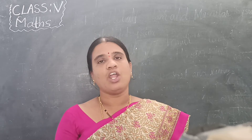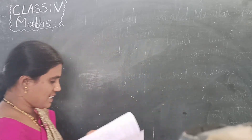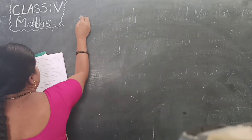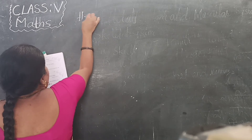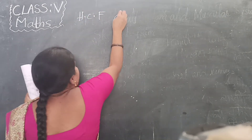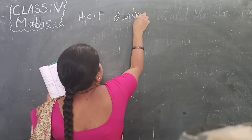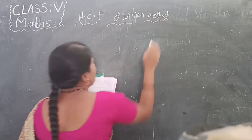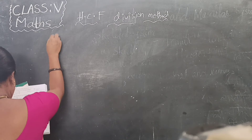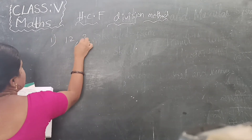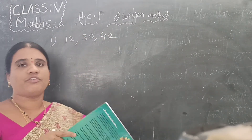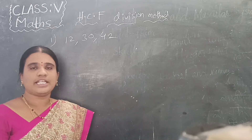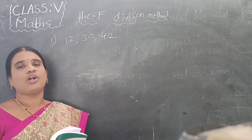How do you do the HCF by the long division method? Once I will give you one question. HCF division method — the first question: 12, 30, 40. Here we are having three numbers. We have to find the HCF of these three numbers by the long division method.